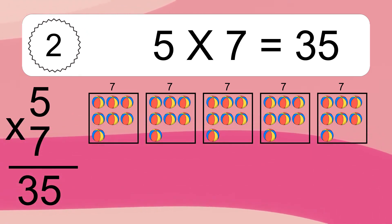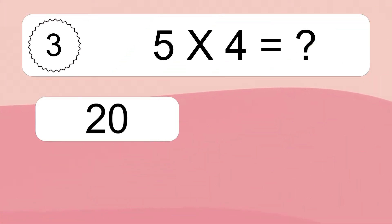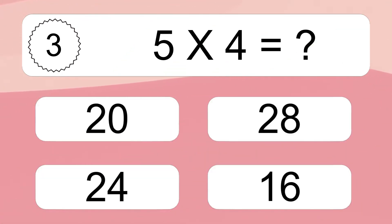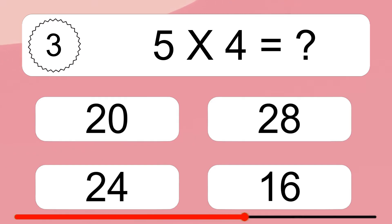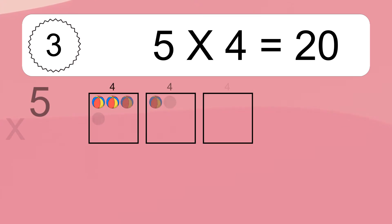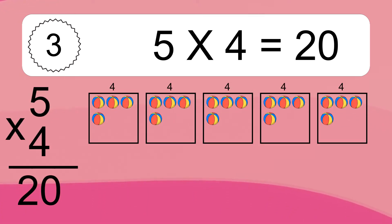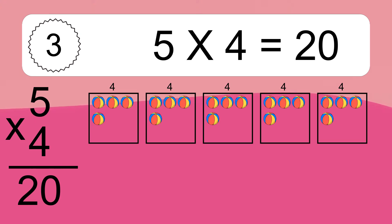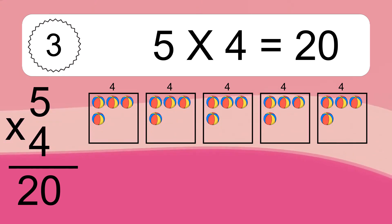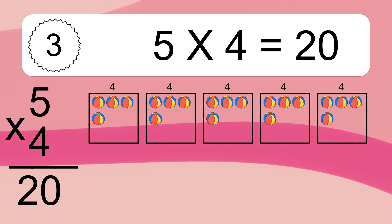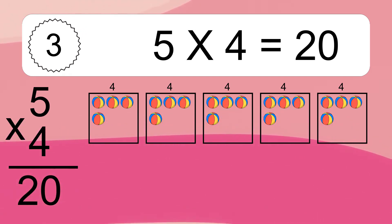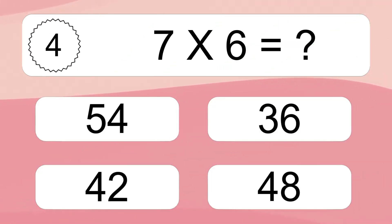This equals 35 balls. 5 times 4 equals what? 5 times 4 equals 20. We have 5 boxes, and each box has 4 colorful balls inside. If you count all the balls in all the boxes together, you will have 5 times 4 balls. This equals 20 balls.